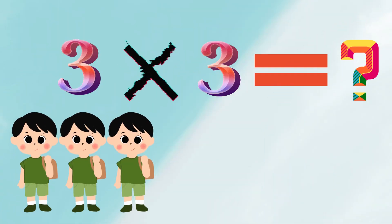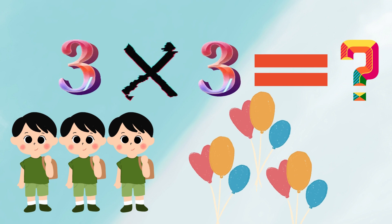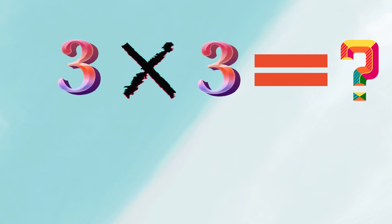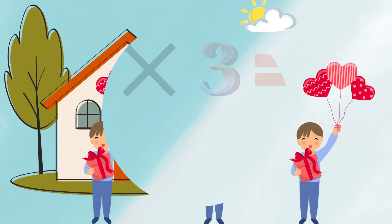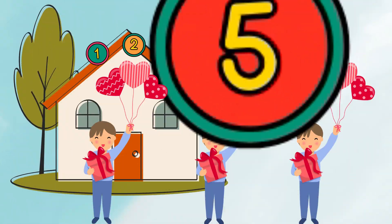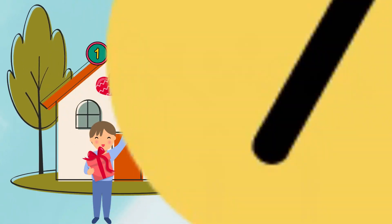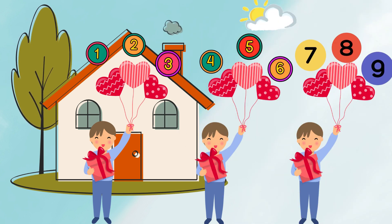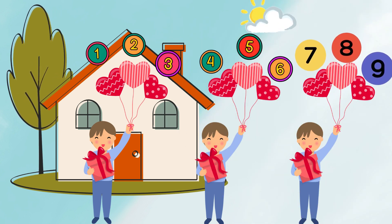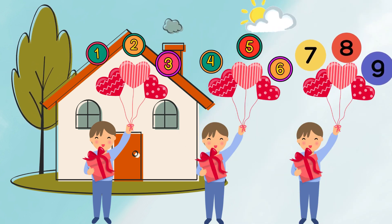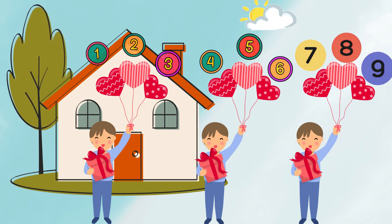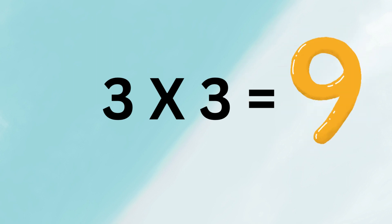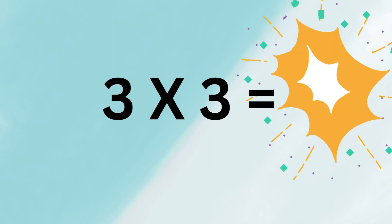Kids, let's have another example: what comes after 3 multiplied by 3? Let's suppose 3 denotes 3 boys and 3 denotes having 3 balloons of each boy. Kids, you can see 3 boys having 3 balloons each in their hands. Let's count together all balloons in total: 1, 2, 3, 4, 5, 6, 7, 8, 9. Kids, total balloons are 9. So the answer of 3 multiplied by 3 is 9.